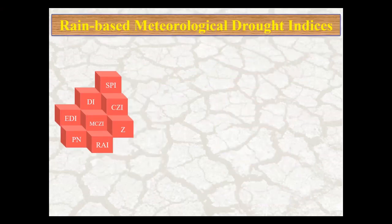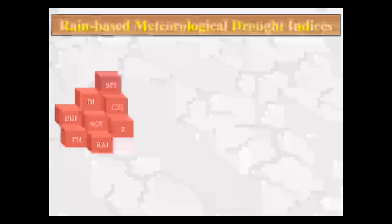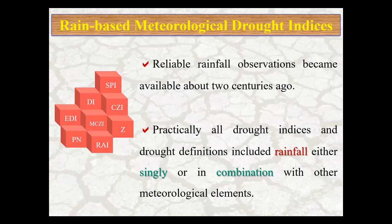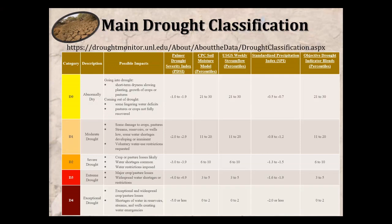For rain-based meteorological drought indices, all types of drought originate from a deficiency of precipitation that results in water shortage for some activity or group. Fortunately, rainfall is an accurate and commonly available element with a long period of record, so practically all drought indices include rainfall either singly or in combination with other meteorological elements. Reliable rainfall observations became available about two centuries ago, and we can also use gridded datasets and remote sensing data.